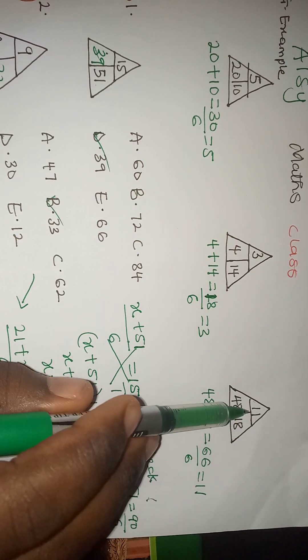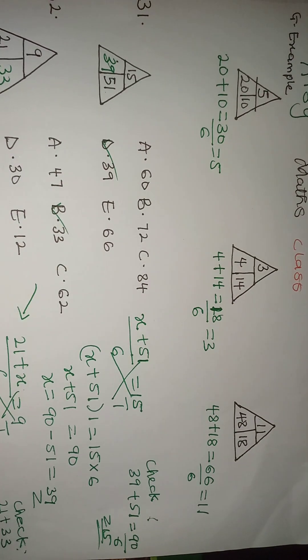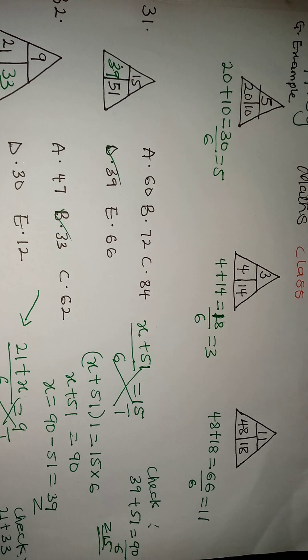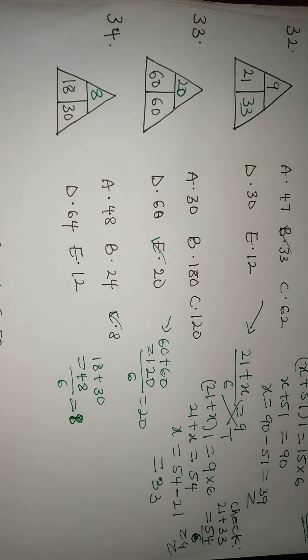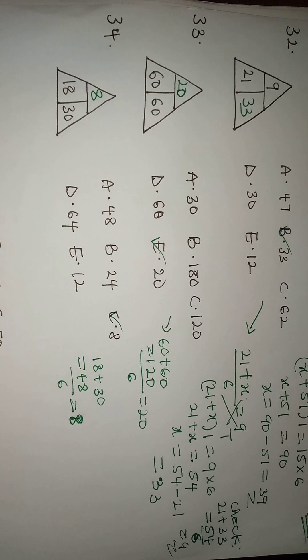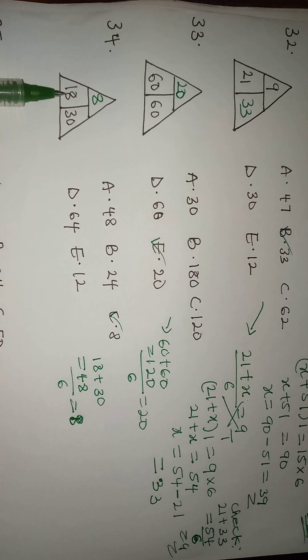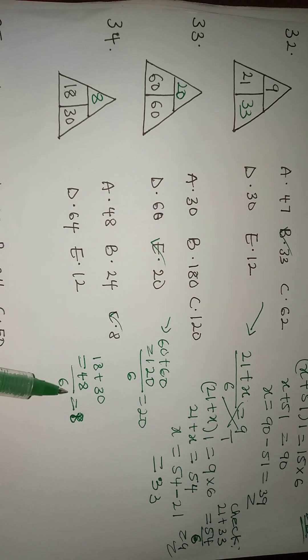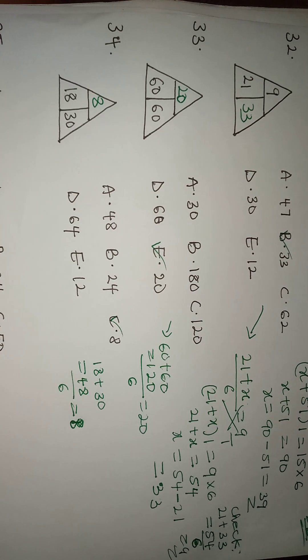And in the last example I got this by adding these two numbers and divided by 6, which is 18 plus 30, 48 divided by 6 will give you 8. So for number 35, the last but not the least here is MC.